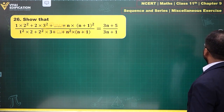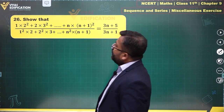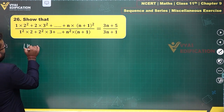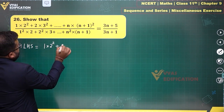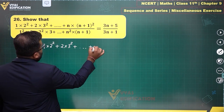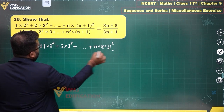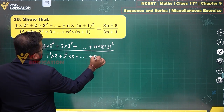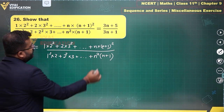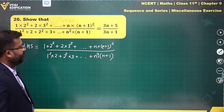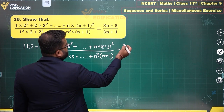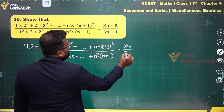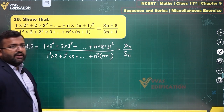In question number 26, we have to show that this equals this — a prove that question. The left hand side looks a bit complicated, so let's try to simplify it. The left hand side is equal to 1·2² + 2·3² + ... + n·(n+1)² in the numerator, and 1²·2 + 2²·3 + ... + n²·(n+1) in the denominator. Let's call the numerator small sn and the denominator capital Sn.